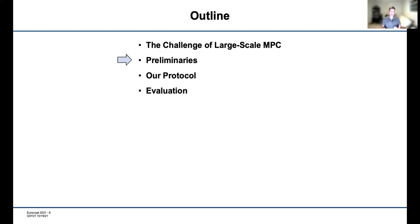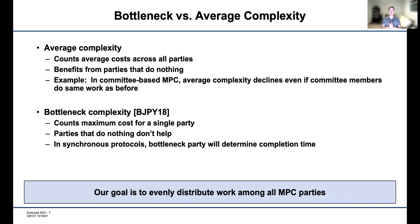Before jumping into our protocol, I want to give some preliminaries on how we measure complexity of large-scale MPC. The traditional measure is average complexity: we count the total communication cost across all parties and divide by the number of parties to get the average. But this has some weird behavior — for example, it benefits from having many parties that do nothing, because they appear in the denominator but not the numerator, hence reducing the average.